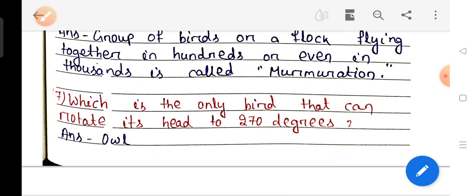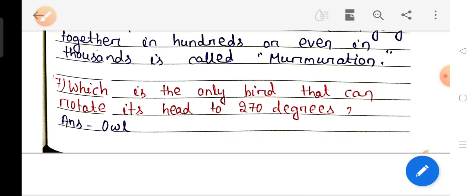Question number 7: Which is the only bird that can rotate its head to 270 degrees? Answer Owl.